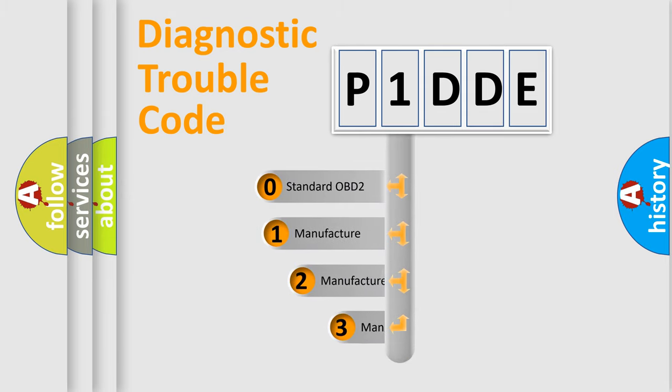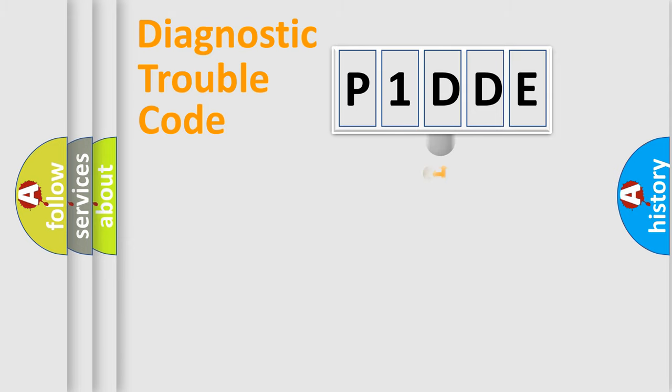If the second character is expressed as zero, it is a standardized error. In the case of numbers 1, 2, or 3, it is a more prestigious expression of the car-specific error.